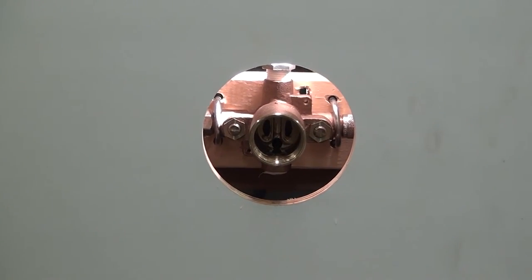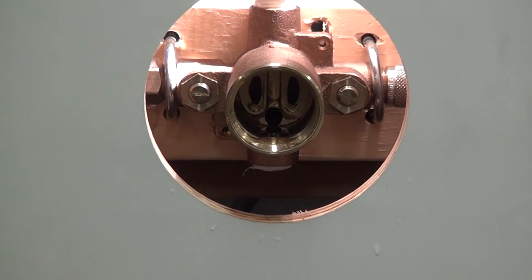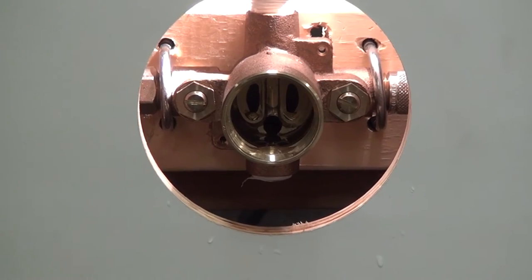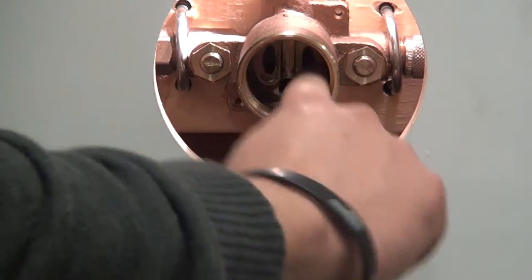Now that the cartridge assembly is out, we want to visually inspect inside the valve body to make sure there isn't any debris or O-rings left inside. Just rub your fingers in here, give it a good look, and make sure it's clean.